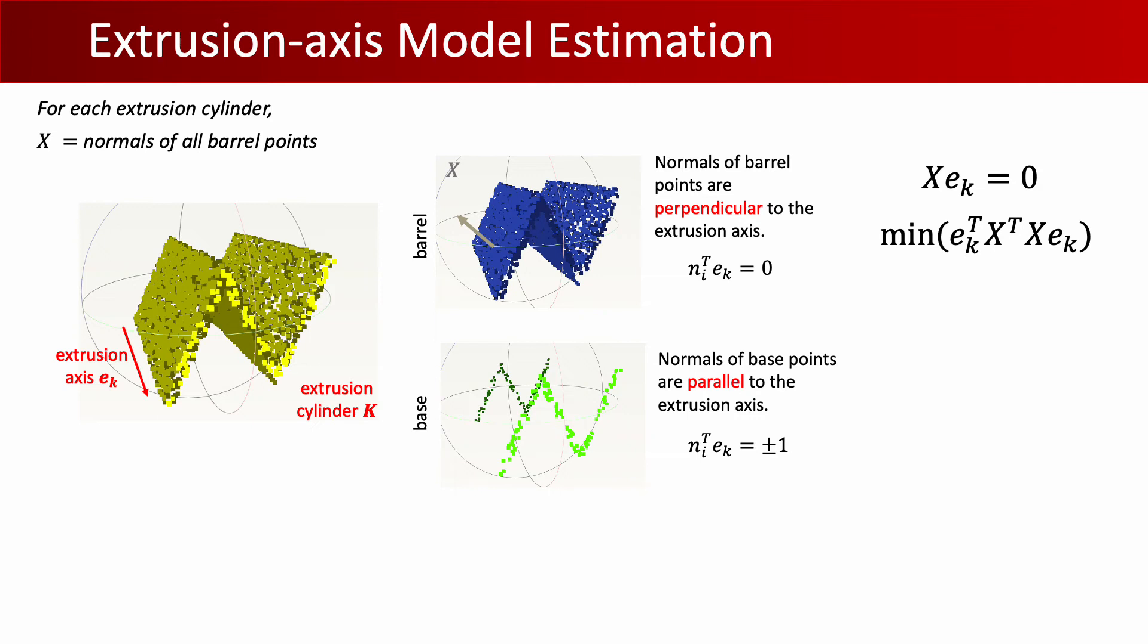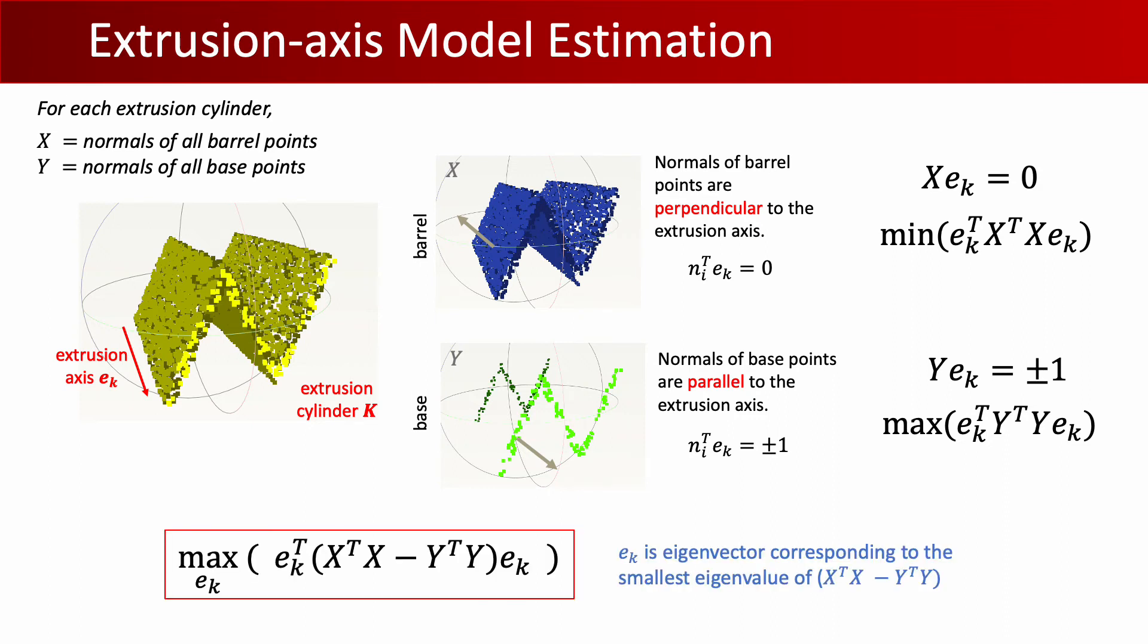Similarly for the base points, we know that the normals are parallel to the desired extrusion axis. Hence concatenating all such normals to a matrix Y, we equivalently want to maximize the following expression. This is equivalent to maximizing the difference as shown. Therefore, the desired extrusion axis e_k is equivalent to finding the eigenvector corresponding to the smallest eigenvalue of X^T·X minus Y^T·Y.